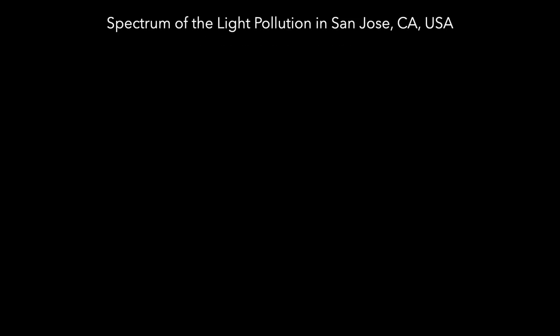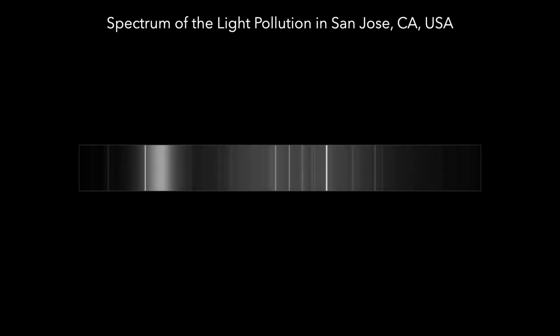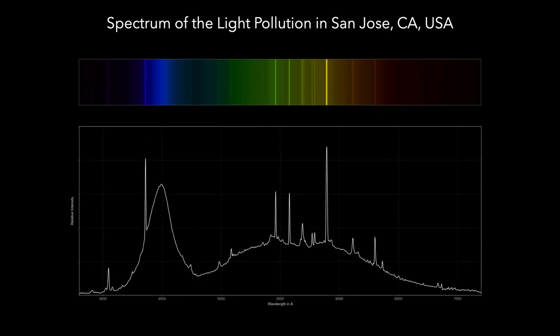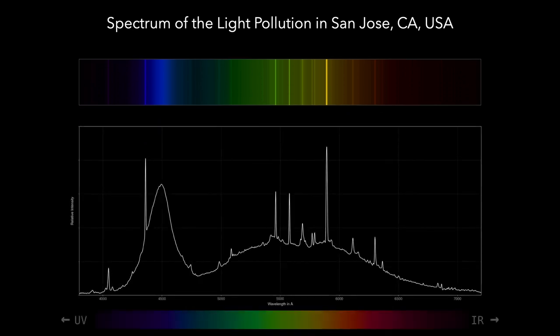Here is the calibrated 2D spectrum of my local light pollution. It is a grayscale image because I use a ZWO ASI 533MM Pro, which is a monochrome camera. But since the 2D spectrum has been calibrated in wavelength, it is easy to colorize it. Once we've also calibrated the spectrum in intensity, we can obtain a spectral profile from that 2D spectrum. Let's take a closer look at the result.